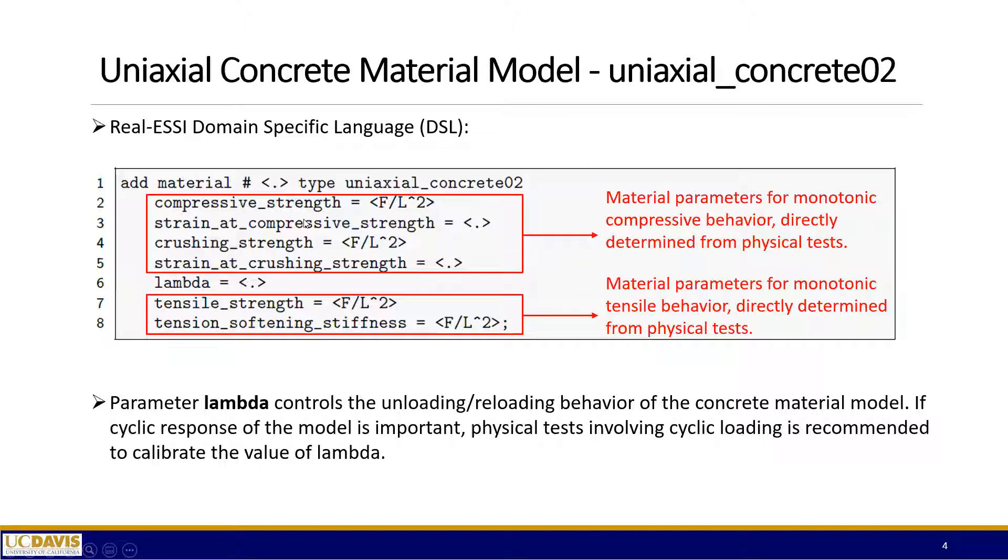This material model can be added into your beam or column using the command add material. The type is the keyword uniaxial_concrete02. Here are the list of material parameters. The first four parameters are for monotonic compressive behavior. They can be directly determined from physical experiments. As you can see, the names of the parameters are pretty self-explanatory: the compressive strength, the strain, the crushing strength and strain at crushing strength.